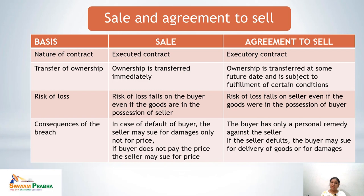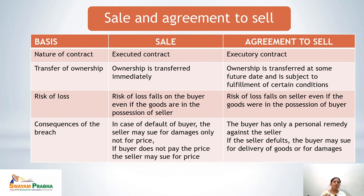On the basis of risk of loss, in a sale, the risk of loss falls on the buyer even if the goods are under the possession of the seller, because ownership has been transferred. In an agreement to sell, the risk of loss falls on the seller because ownership is still with the seller. Risk only goes with ownership — where there is ownership, there is risk.